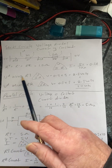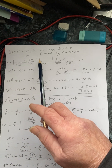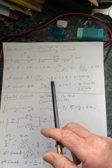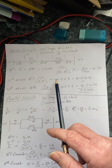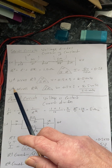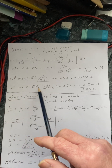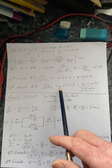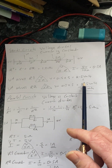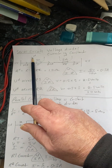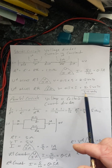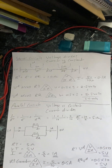Volt drop across R1: using Ohm's Law VIR, V = I × R = 0.5 amps × 5 ohms = 2.5 volts. The same applies for R2: V = 0.5 amps × 5 ohms = 2.5 volts. So there's 2.5 volts dropped across R1 and 2.5 volts dropped across R2. And 2.5 plus 2.5 equals 5 volts — your total supply. That tells you you've got it right.